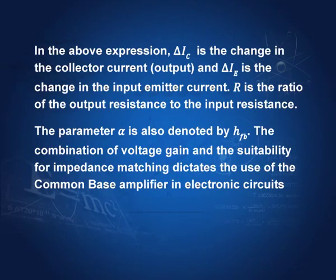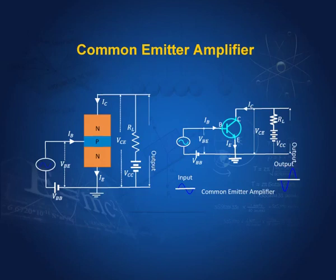The combination of voltage gain and suitability for impedance matching dictates the use of the common base amplifier. If the output impedance of an active device is low and the input impedance of the receiving device is high, we use the common base amplifier in between for impedance matching. Let us now look at the common emitter amplifier. The common emitter amplifier is the most important of all these configurations. One key reason is the phase difference of 180 degrees between the input and the output.